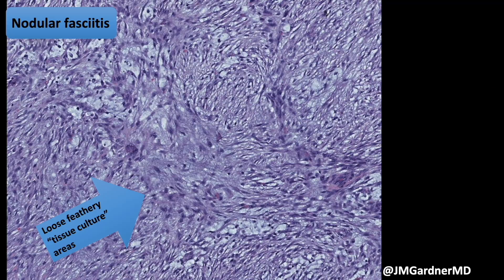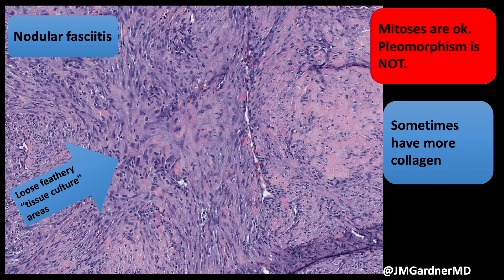Here's another case — a variant that looks quite different because it has a lot more collagen. Sometimes you get very loose myxoid nodular fasciitis; sometimes you get very cellular, mitotically active lesions, particularly in the early cellular growth phase. In older, burnt-out lesions they become more sclerotic and collagenized. Here we still have a feathery tissue culture area where the cells are not only spindled but jagged, pointy, triangular, or stellate-shaped. In other areas you can have sclerotic collagen.